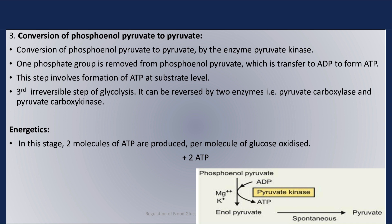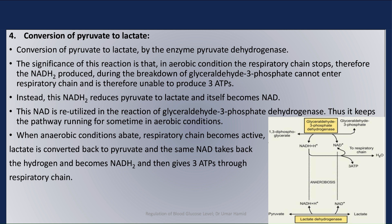Step 4 is the conversion of pyruvate to lactate by the enzyme pyruvate dehydrogenase. The significance of this reaction is that in anaerobic conditions, the respiratory chain stops; therefore, the NADH2 produced during the breakdown of glyceraldehyde-3-phosphate cannot enter the respiratory chain and is unable to produce 3 ATPs. Instead, this NADH2 reduces pyruvate to lactate and itself becomes NAD. This NAD is reutilized in the reaction of glyceraldehyde-3-phosphate dehydrogenase, thus keeping the pathway running for some time in anaerobic conditions.